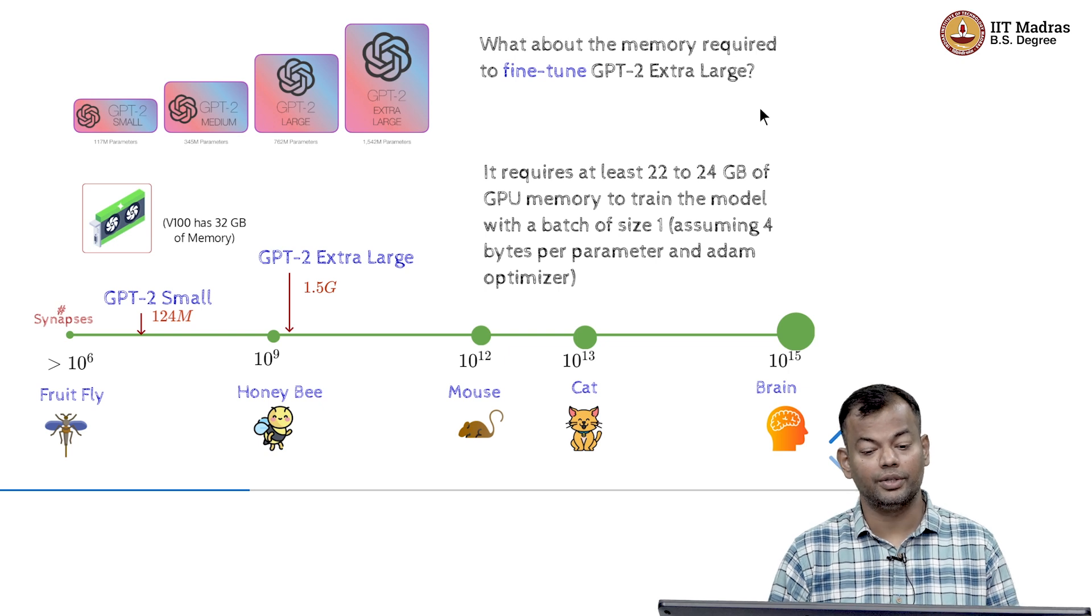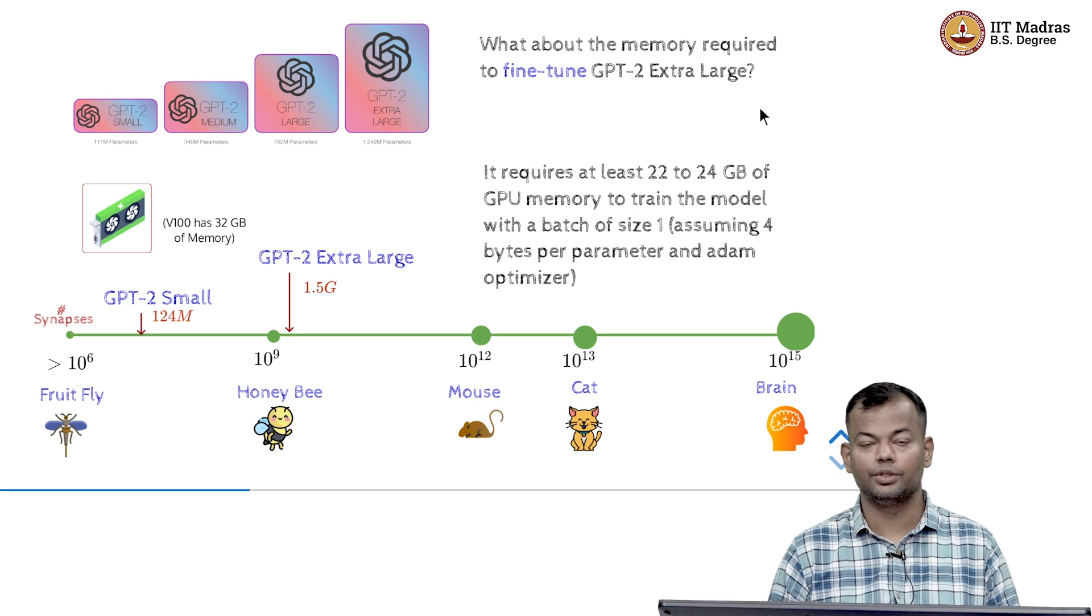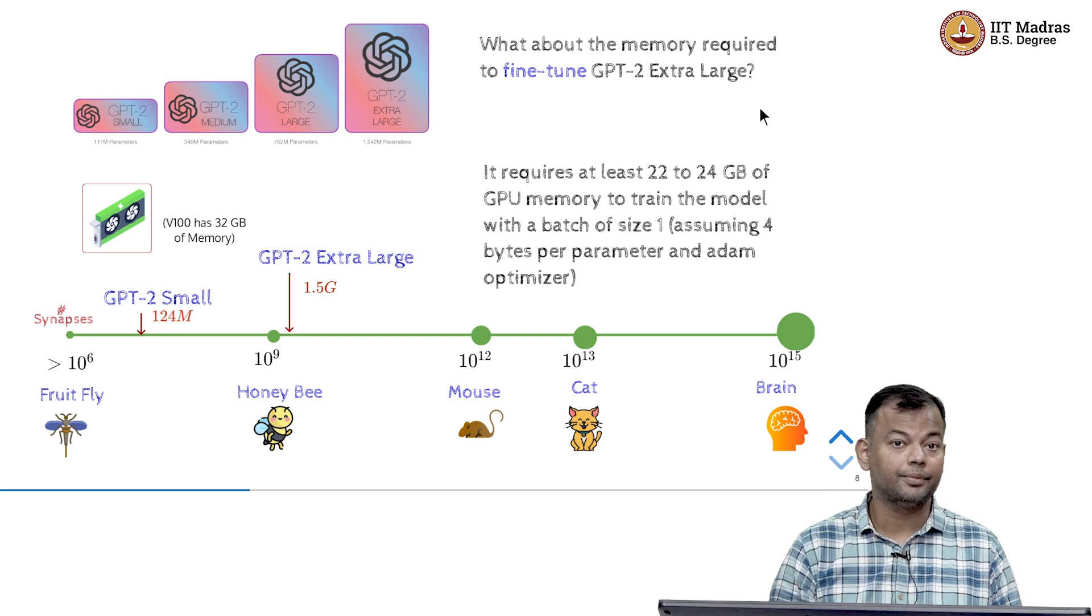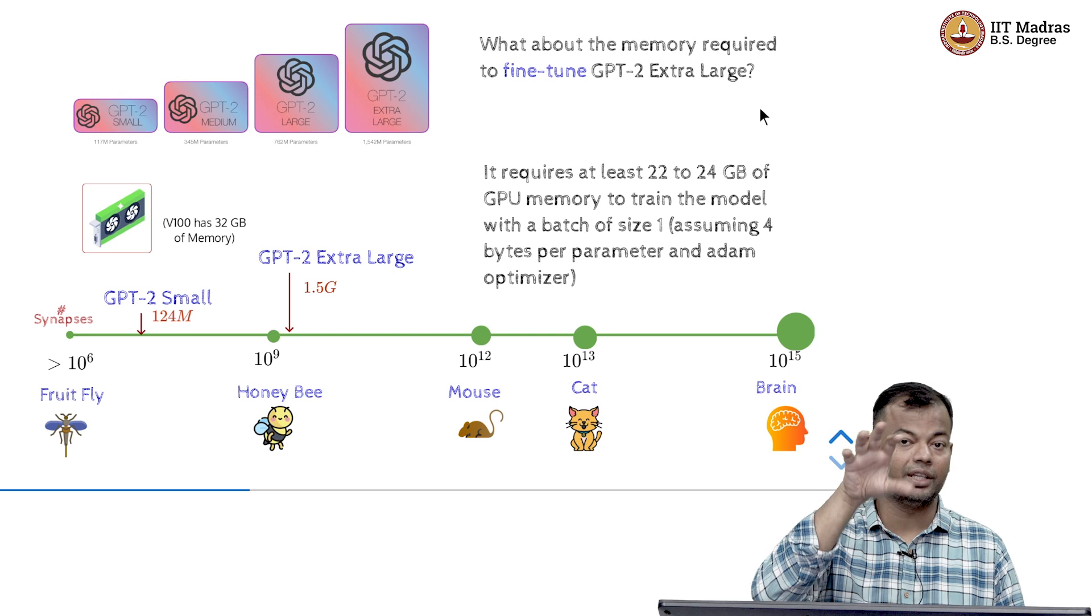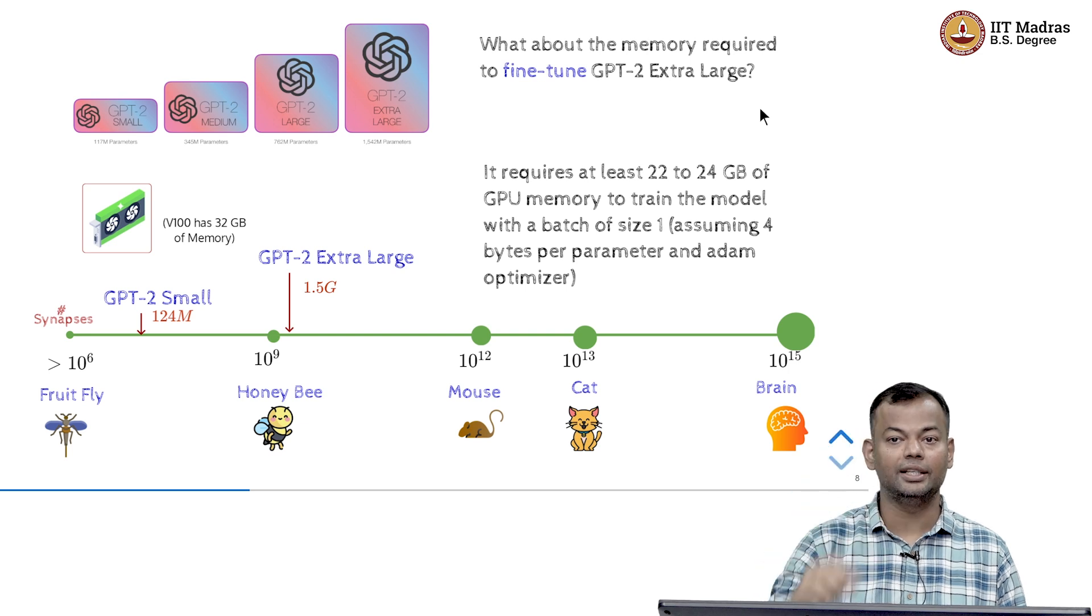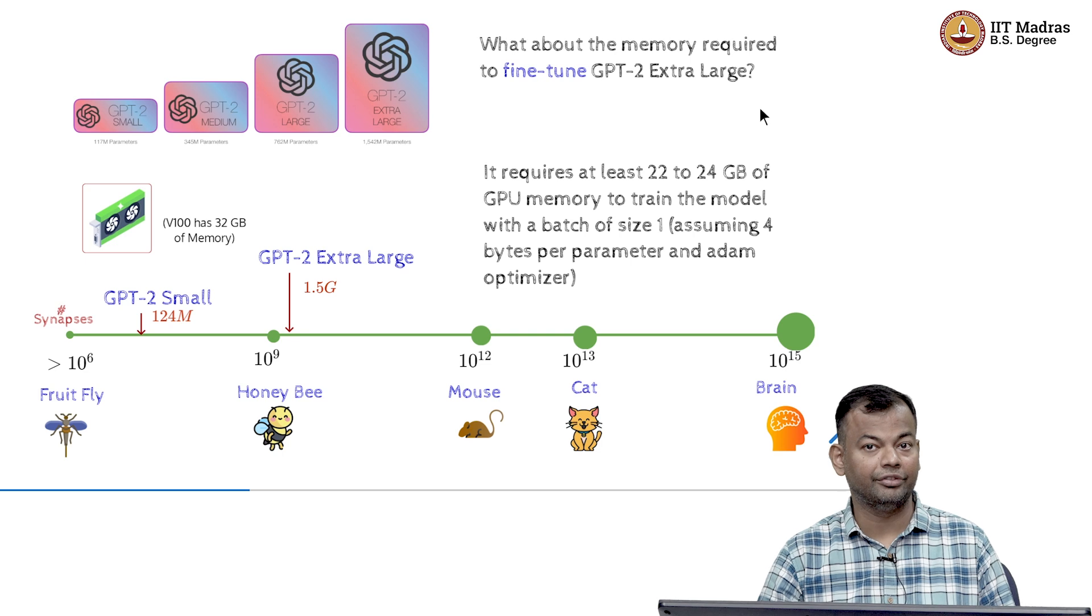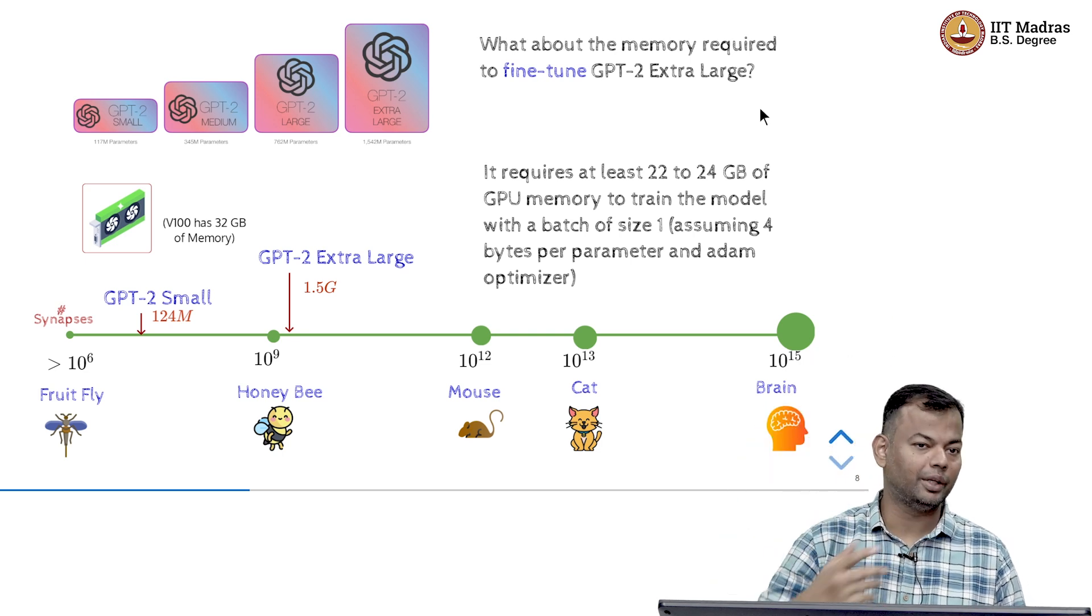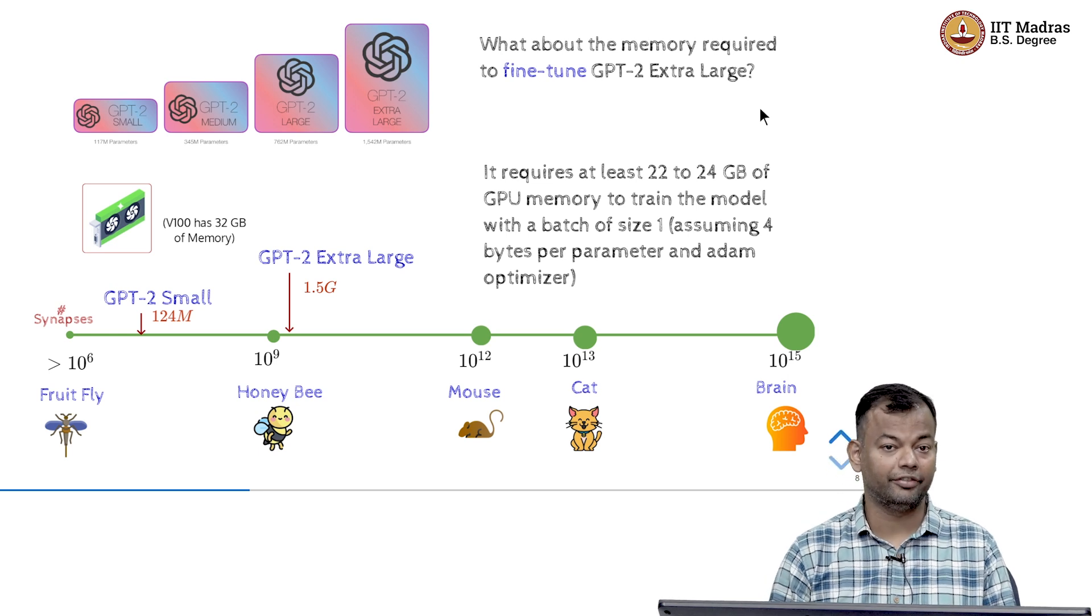Say the extra large model which has 1.5 giga parameters, that would be very difficult to fit on a single GPU. It requires at least 22 to 24 GB of GPU memory and that too with a batch size of 1. So, then passing the entire data through it, fully fine tuning it, it becomes very expensive if you do not have access to enough compute power.